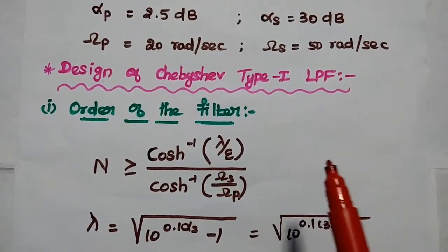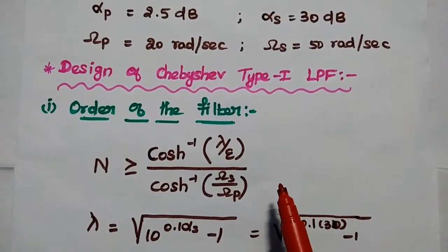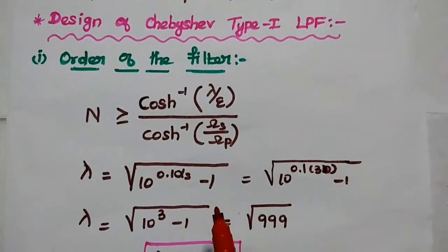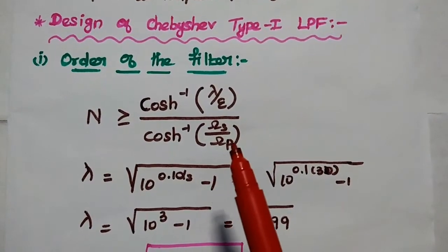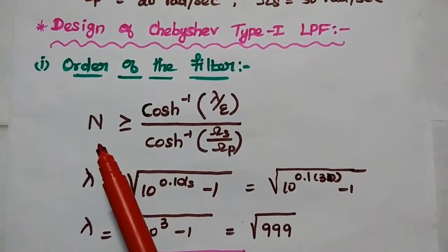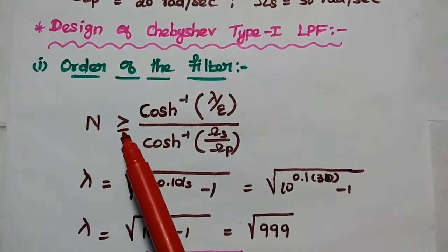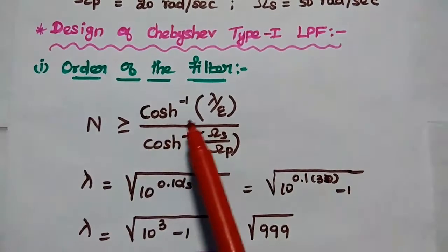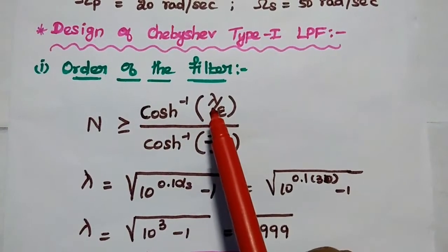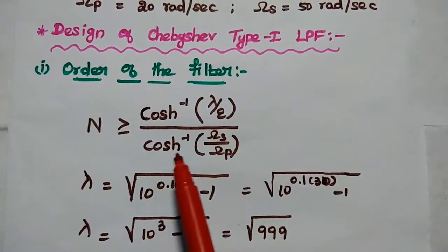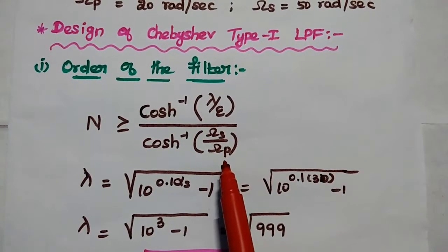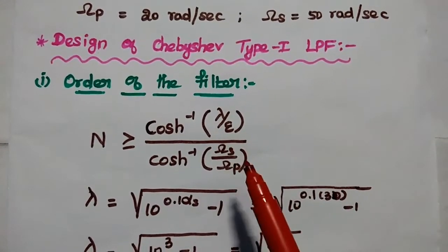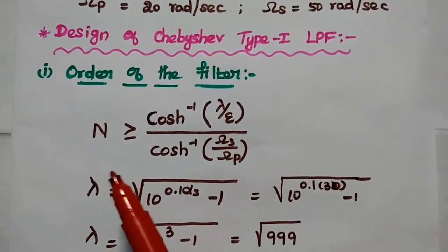The design steps of this Chebyshev filter have already been discussed in the previous lecture video — you can refer to that video for the design steps. The first step in the design procedure is to find the order of the filter N, which must satisfy N ≥ cosh⁻¹(lambda/epsilon) divided by cosh⁻¹(omega_S/omega_P). First, we need to find the values of lambda and epsilon, then substitute those values in this formula to get the order of the filter.